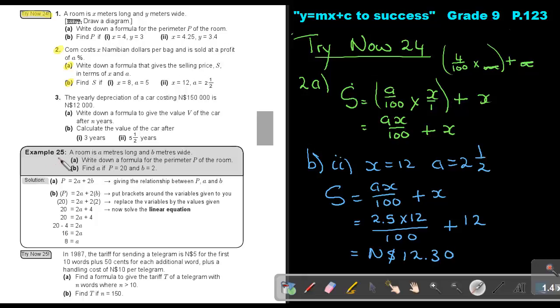Let's go through Example 25. A room is A meters long and B meters wide. Write a formula for the perimeter of the room. That's a rectangle. The perimeter is 2 length plus 2 breadth, so it's 2A plus 2B. Find A if P is 20 and B is 2. Just substitute, so just solve the linear equation. Subtract 4 on both sides, divide by 2, and the value of A will be 8.